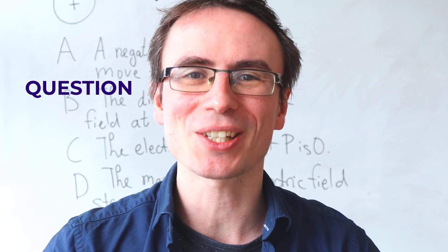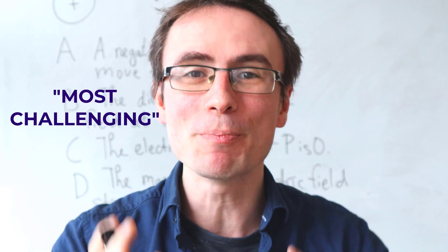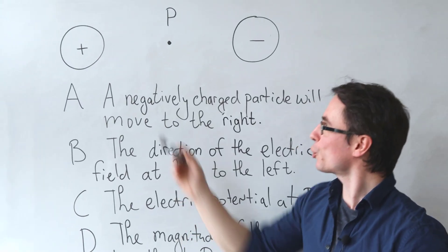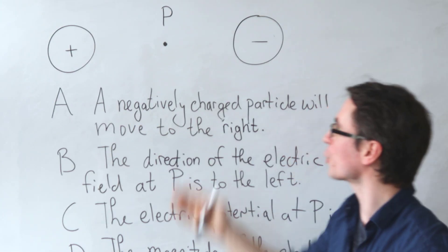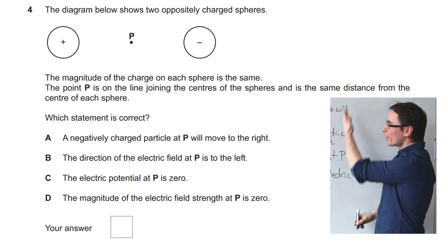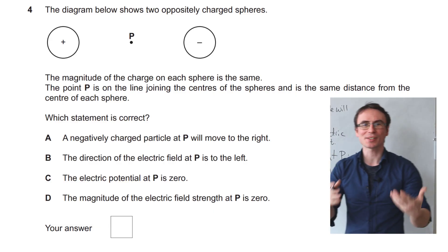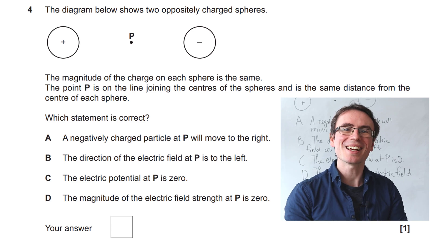Let's have a look at an A-level physics question on electric fields that was most challenging. We have two charged particles of identical but opposite charge and point P is right between them. Which of the following statements is correct? Please choose an answer now.